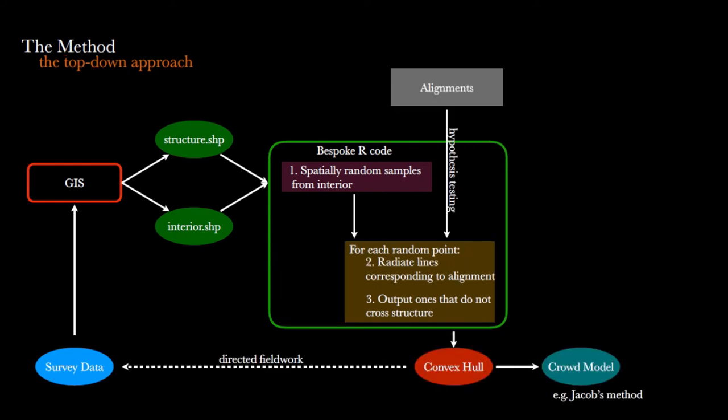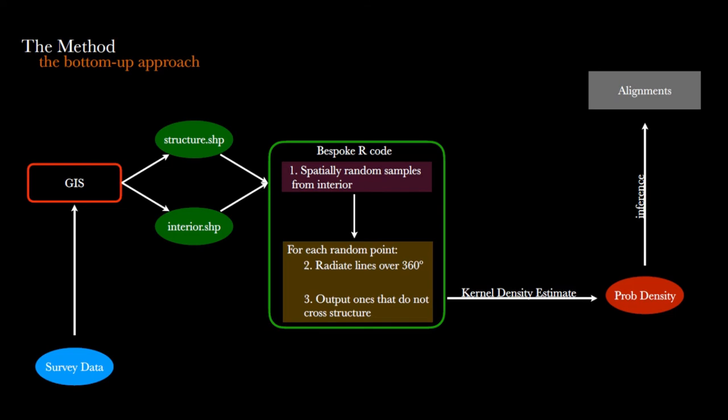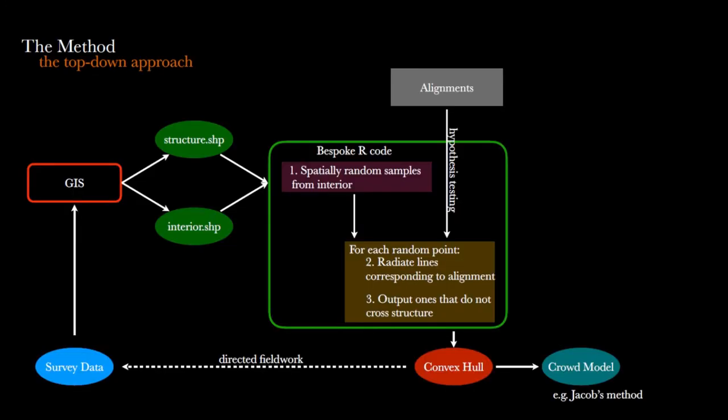Using the same modules, you can have what I call the top-down approach. I've called this the bottom-up approach because you basically start from the survey data and you go up to the alignment—you're climbing Hawkes' ladder of inference if you want. But you can also have a top-down approach using the same modules but in a slightly different way, where you can say, 'Okay, I want to test a hypothesis—I want to test whether the December solstice sunset works for this site.' So you basically just radiate lines corresponding to that alignment for every point inside the structure and see which ones don't cross the structure. You can then create the convex hull around that, which will show you the area inside your structure that permits that alignment.